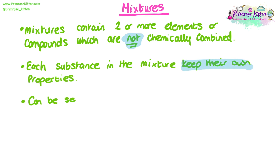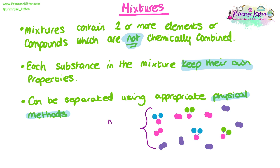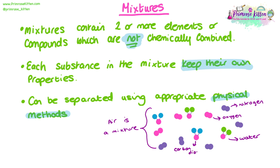Mixtures can be separated back into the elements and compounds that form them using the appropriate physical method. A great example of a mixture is air — the air that we breathe. Air contains nitrogen and oxygen, which are elements, as well as water vapour and carbon dioxide, which are compounds. Nitrogen, oxygen, water and carbon dioxide have not chemically reacted with each other; they remain as separate entities within the mixture, meaning air can be separated back into samples of each if needed.